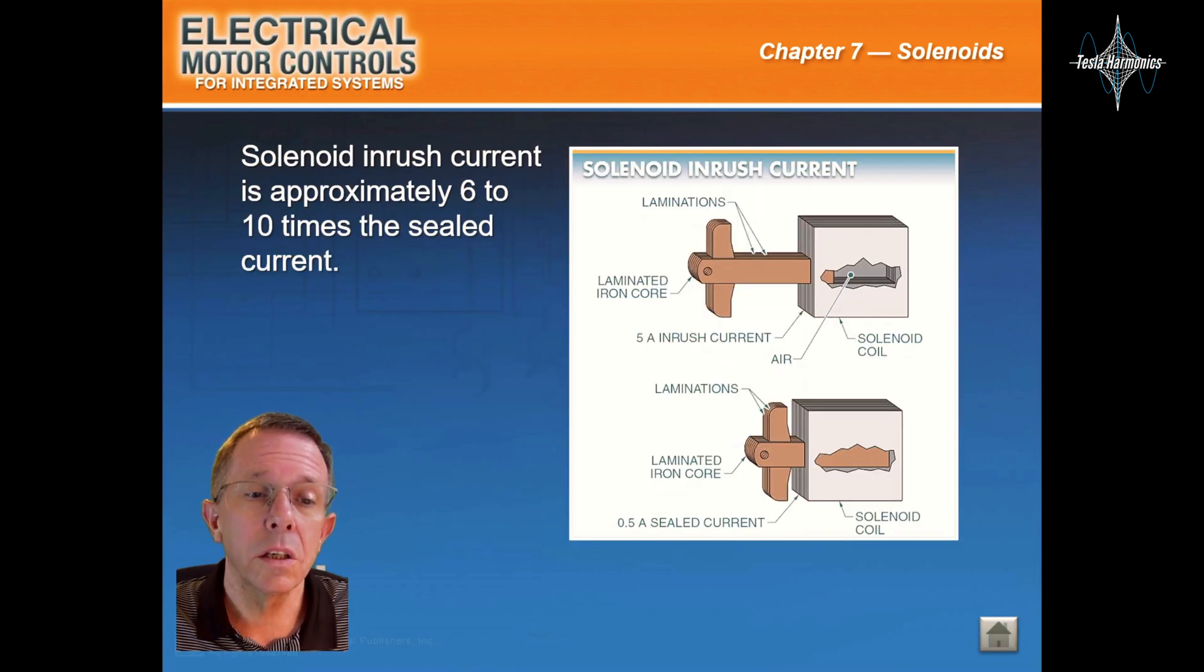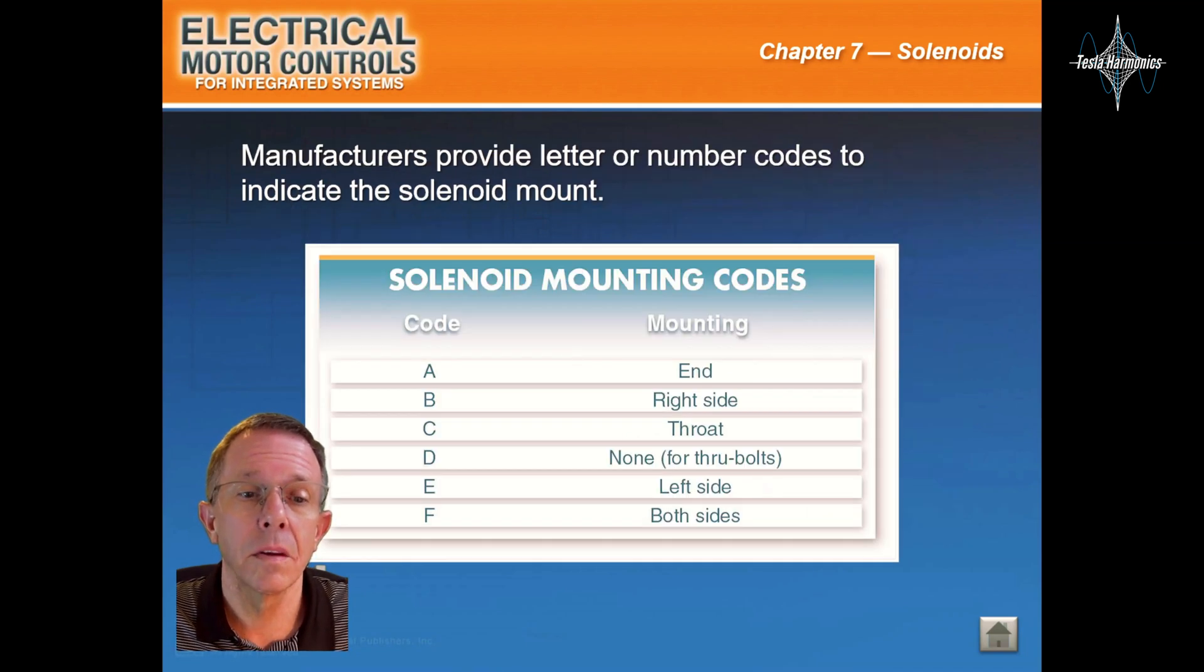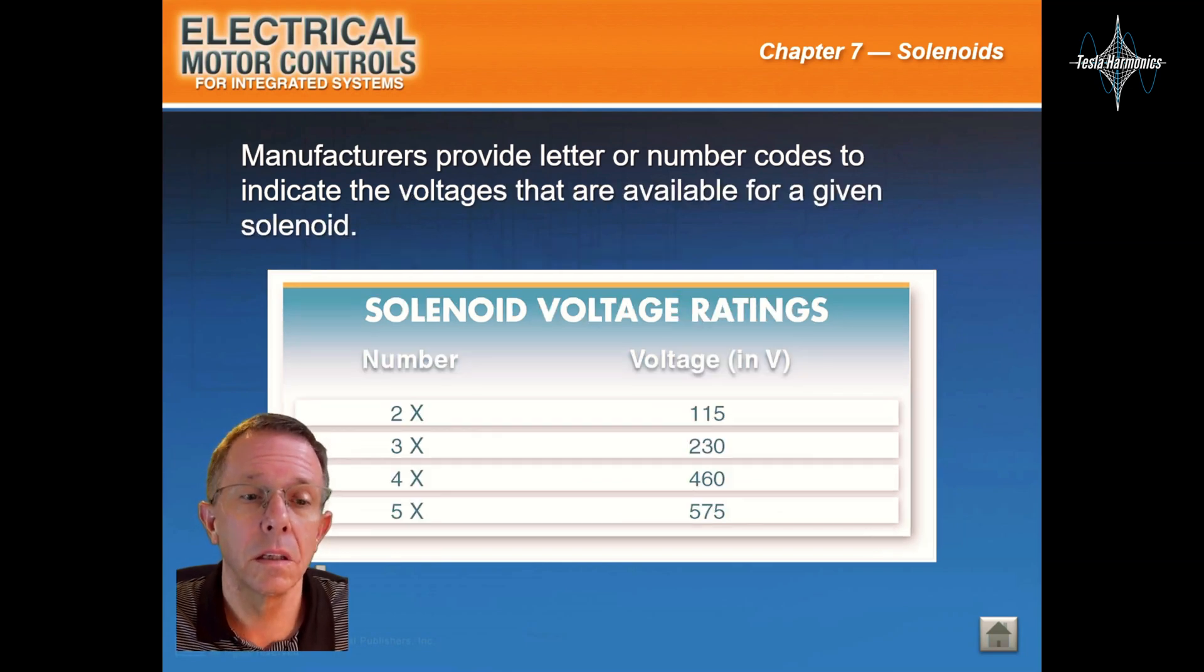The solenoid inrush current is approximately six to ten times the sealed current. Manufacturers provide letter or number codes to indicate the solenoid mount and the voltages that are available for a given solenoid.